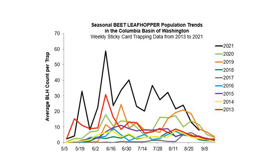Insect populations vary in size from season to season. Intervention with insecticides may be needed one year and not another. This graph shows the average weekly beet leafhopper counts in the Columbia Basin each year from 2013 to 2021. In some years like 2014, 2016, and 2017, beet leafhopper populations were relatively small throughout the region and growers didn't really need to worry too much about this pest. But in 2013, and especially in 2021, populations were very large and this put the crop at a higher risk for problems.